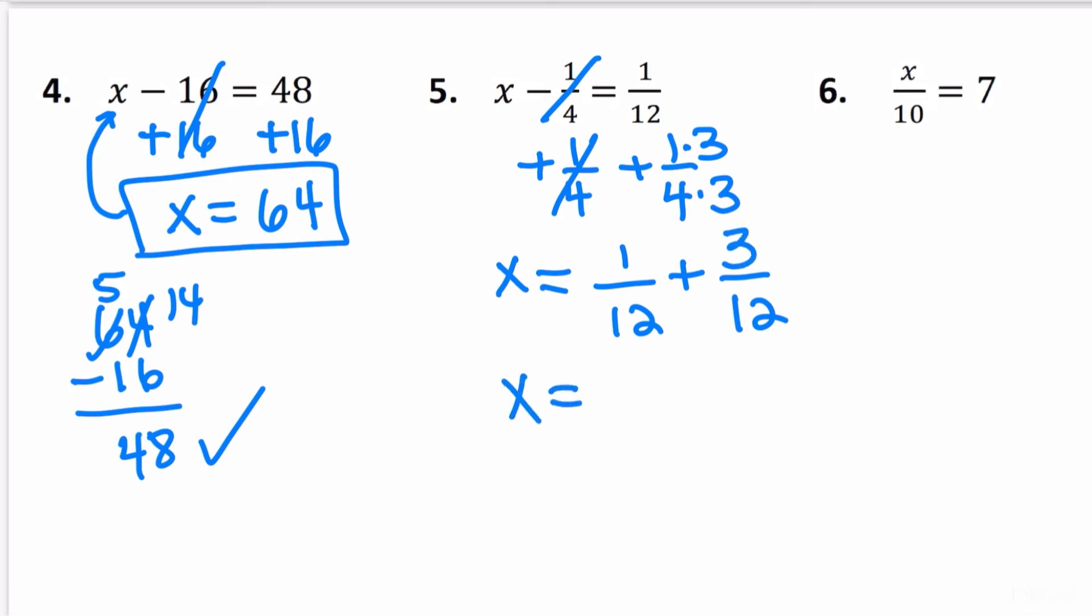Now that they have the same denominator, you add the numbers at the top, the numerator. 1 plus 3 is 4. The denominator stays the same. Then we can reduce the fraction by asking ourselves, what number are both of these divisible by? They're both divisible by 4, so this answer is 1 third. x is equal to 1 third.